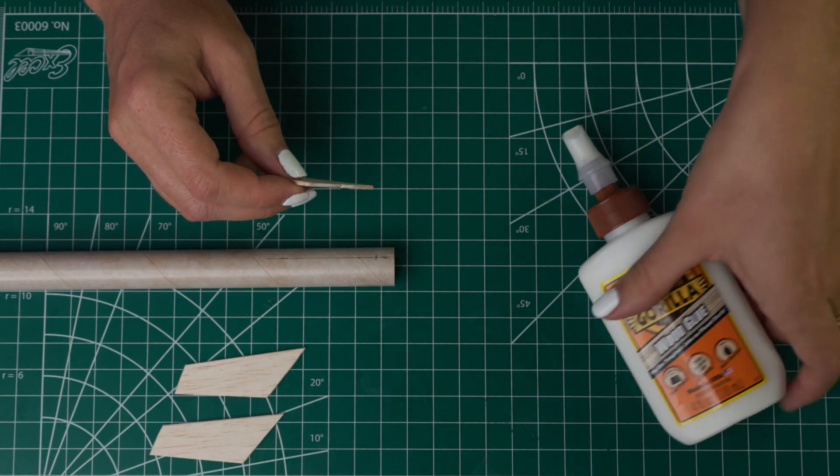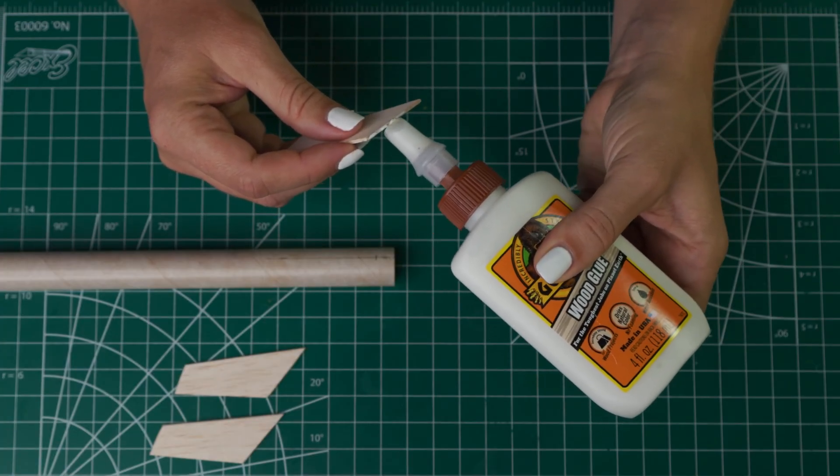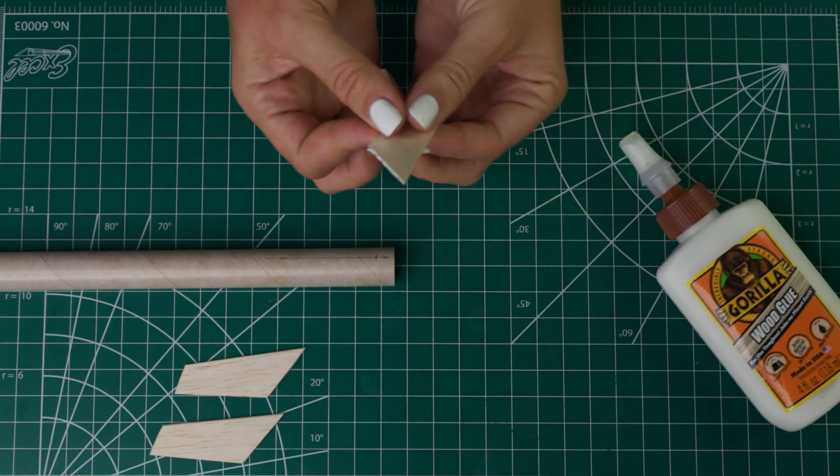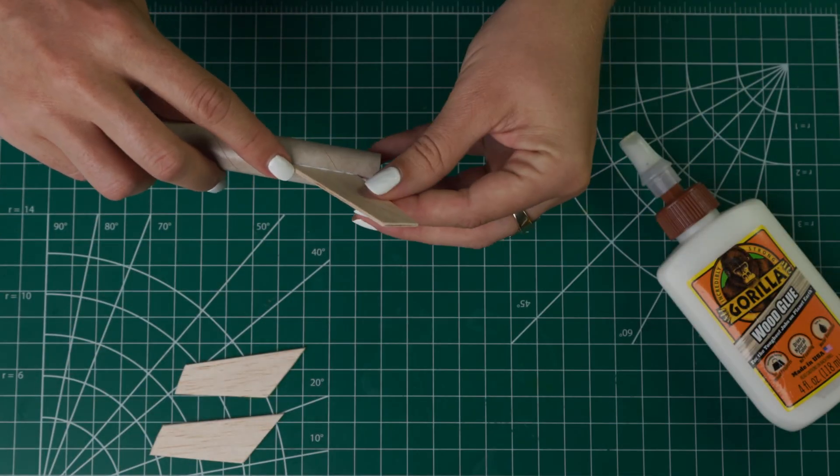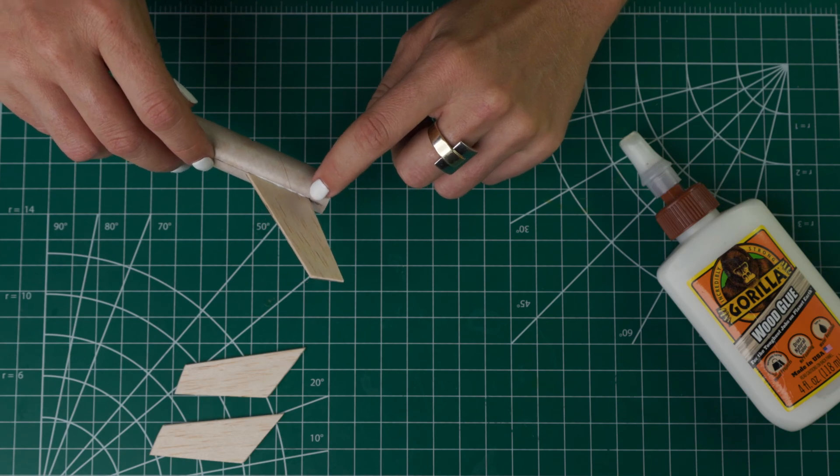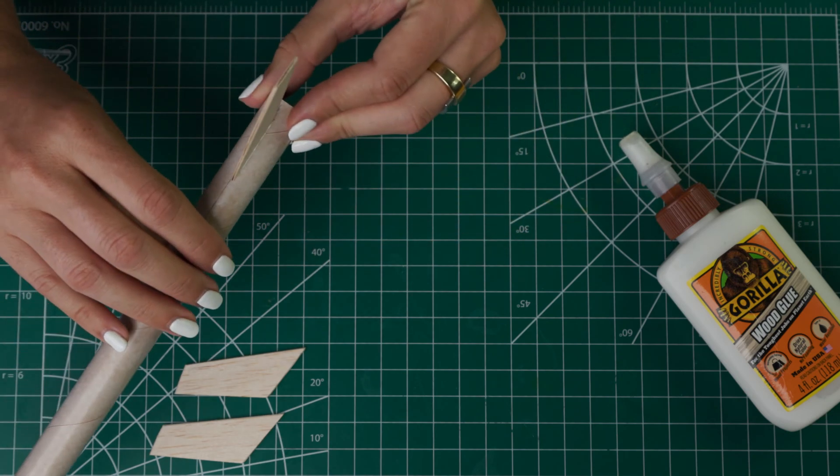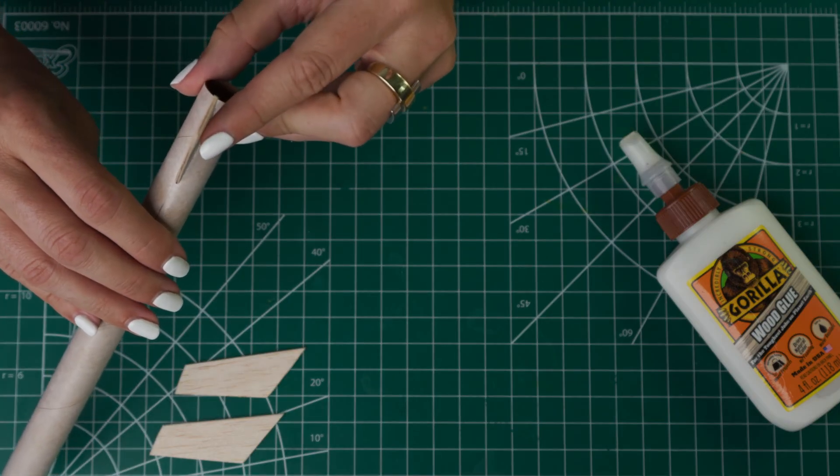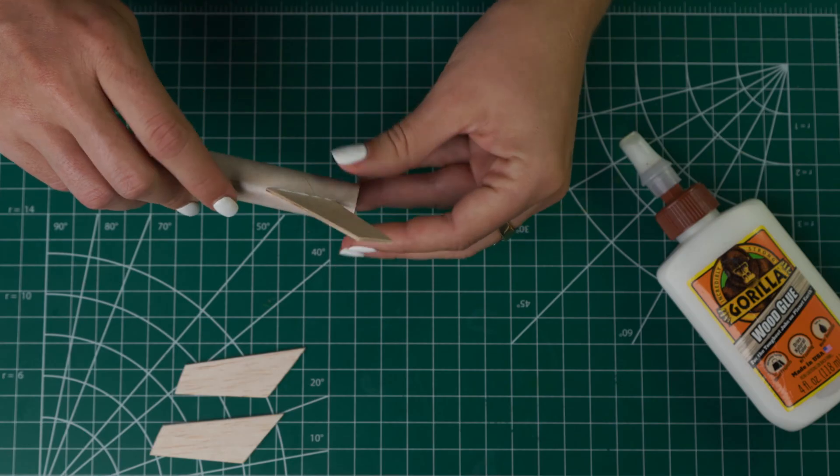Once our first layer has dried we'll apply our second layer and then put it on the body tube. Make sure that the bottom of your fin is at that mark at three eighths of an inch that you put and then try to make it as straight as you can. We will align it in just a second. And then repeat for the other two fins.